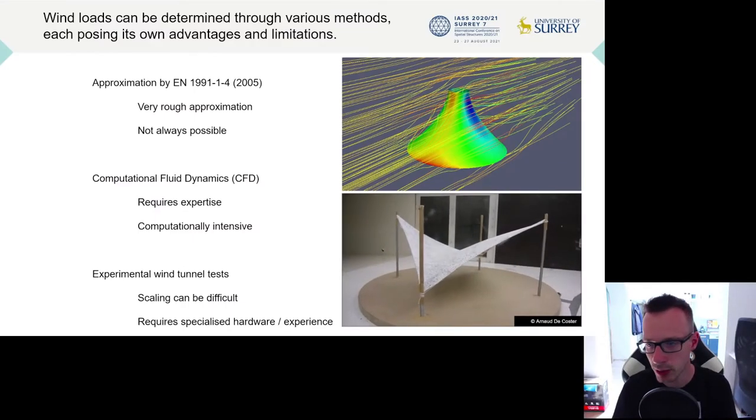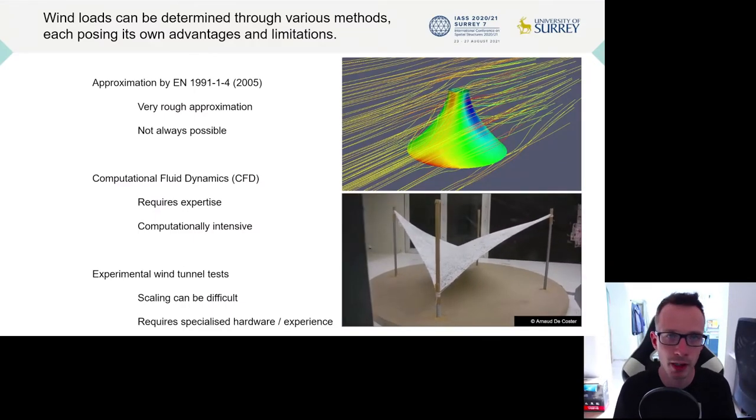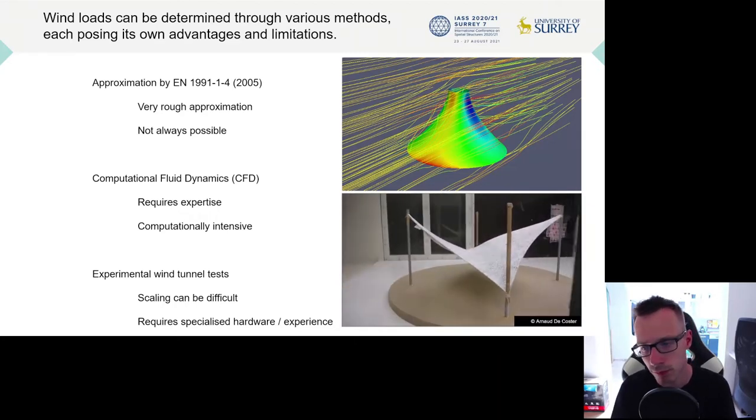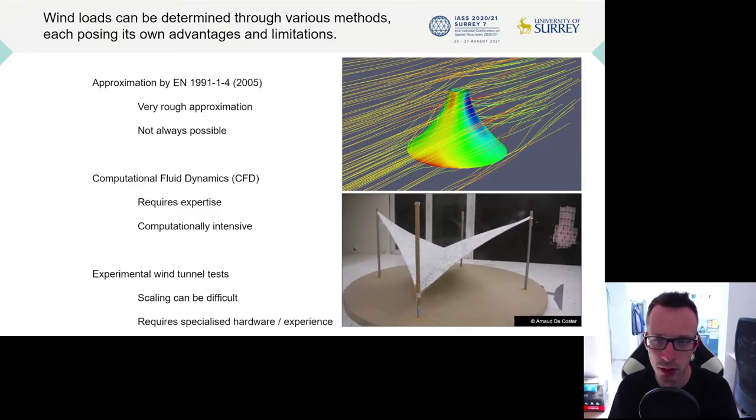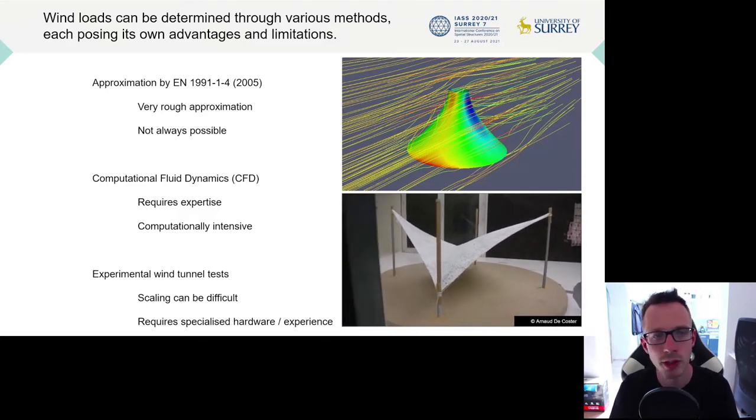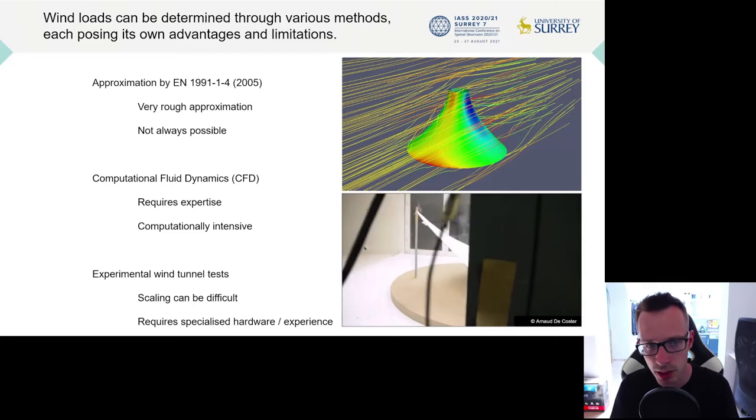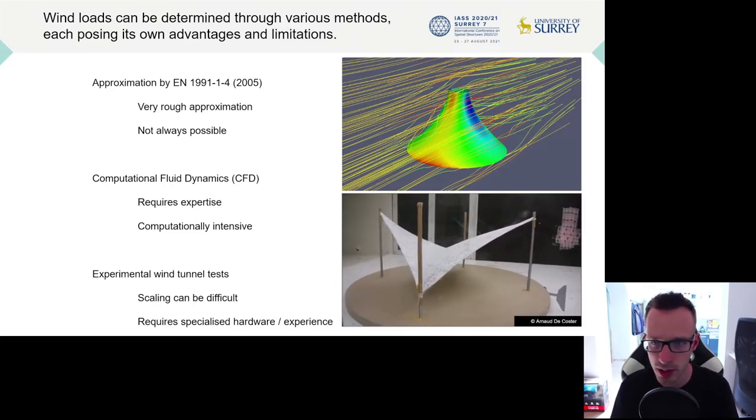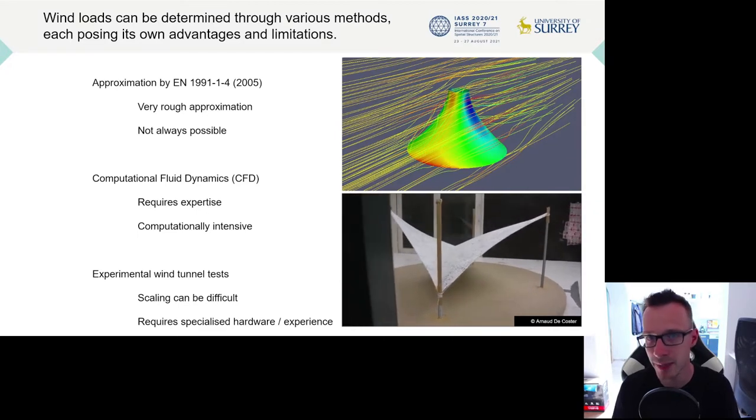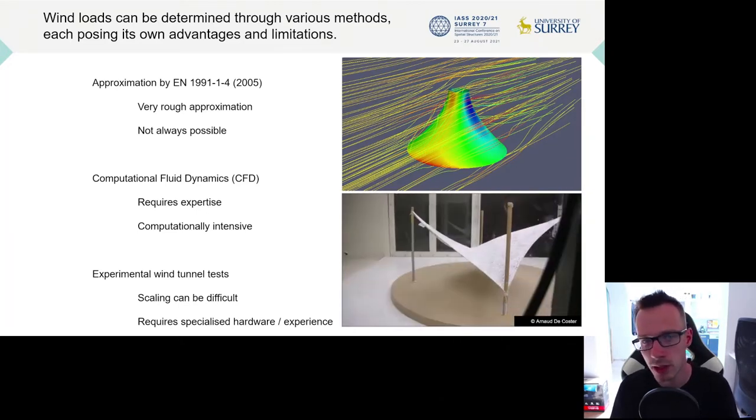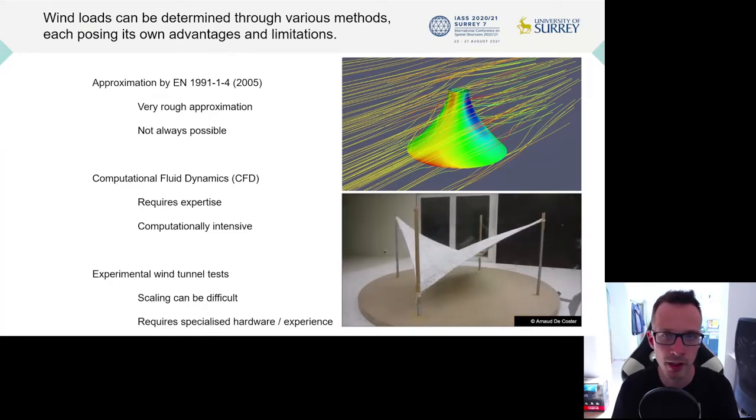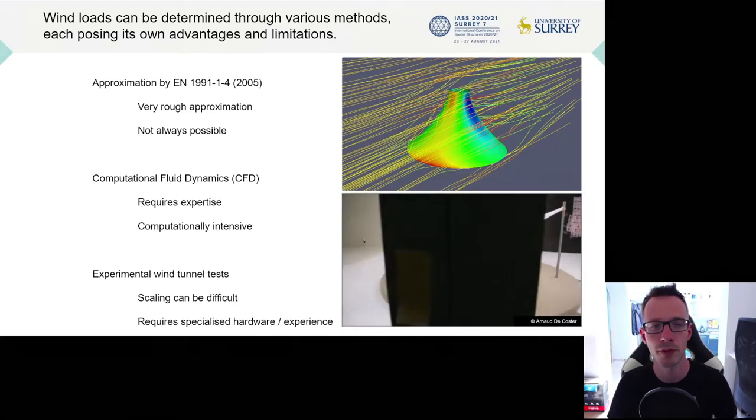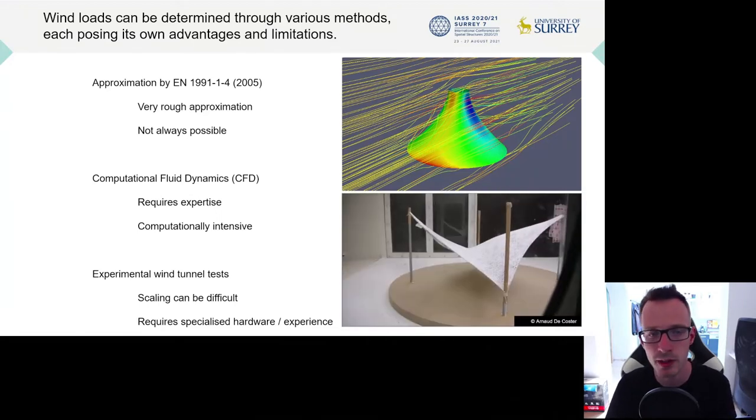Right now we have three main ways of analyzing membrane structures under wind loads. The first one is approximating the geometry and the resulting load using existing building codes. But since these building codes are usually not created with membrane structures in mind, it will be at best a very rough approximation. And in certain cases it won't be possible at all as the membrane geometry deviates too much from the set of proposed geometries in this building code.